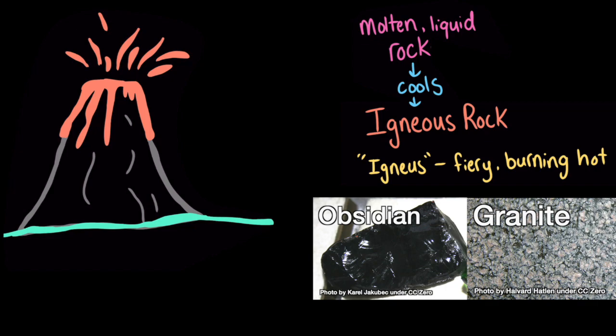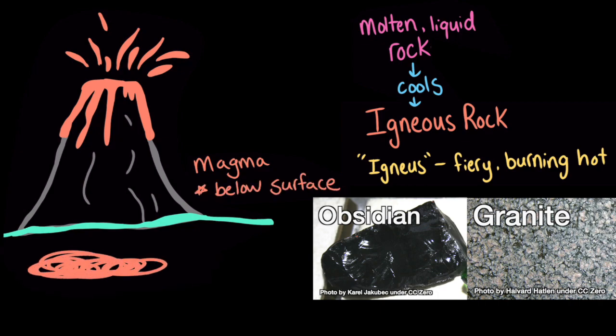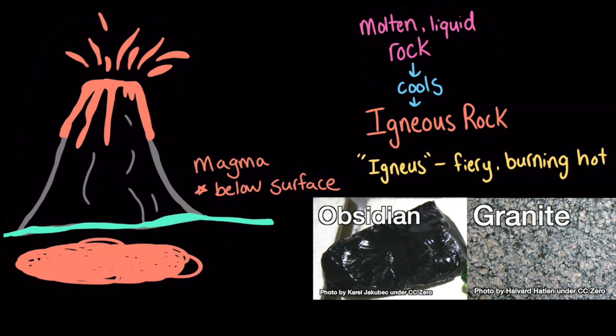Well, granite was made from magma, which is molten rock that exists below the surface of the earth. Magma tends to cool slowly underground, which gives time for the elements in it to form large crystals. And this obsidian rock was made from lava, which is molten rock that flows above the ground. Lava tends to cool quickly, which causes the rocks it forms, like obsidian, to have smaller crystals.